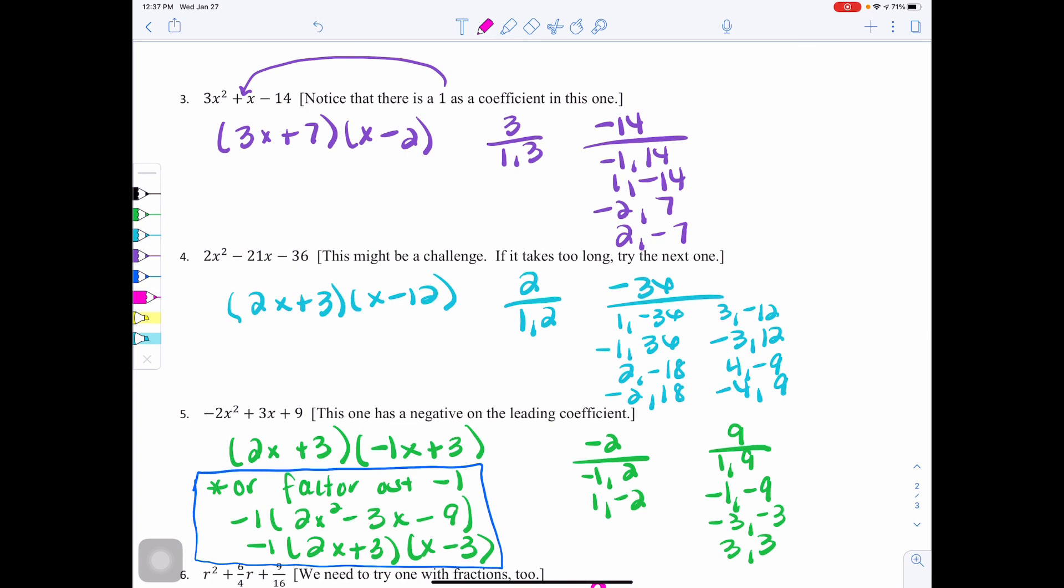Going on to the next page, number 3 said to notice there's a 1 as a coefficient in the middle. So just a reminder when you do not see anything there that it's actually a positive 1. So your answer there should be 3x plus 7 times x minus 2. You'll still see me on this page listing my factors. Again, you can check it if you need to since this is trial and error.